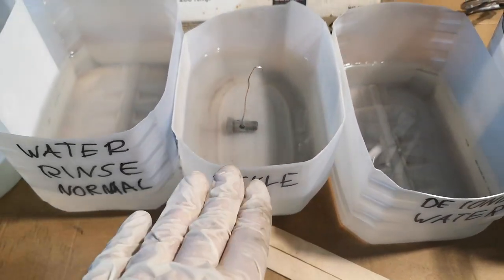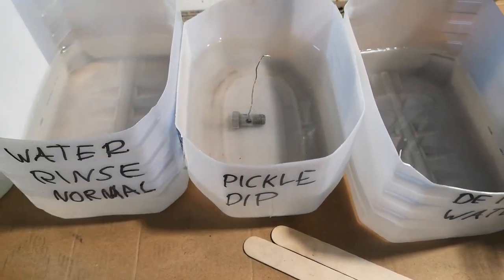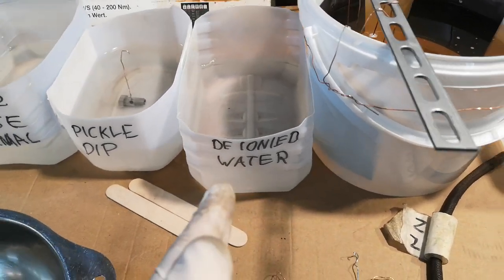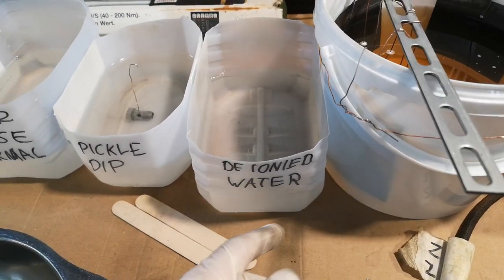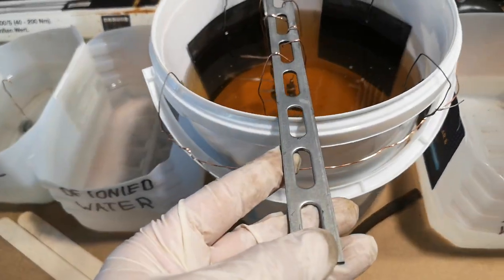Sometimes you can clearly see where there's rests of old coatings and stuff. And this cleans the part and etches it before it goes into the electrolysis tank. After this step, I'm going to leave this here because it has to stop bubbling. After this step, it goes to the deionized water to rinse it off. And then we go into the tank.